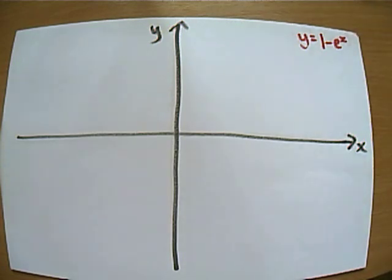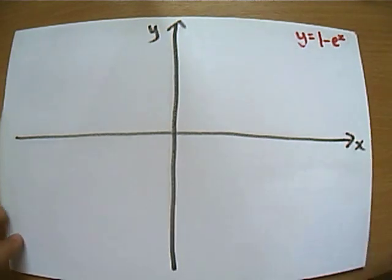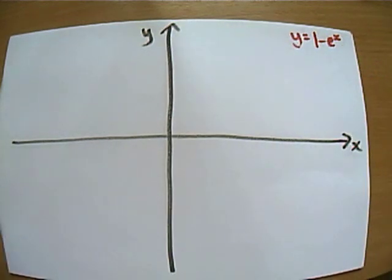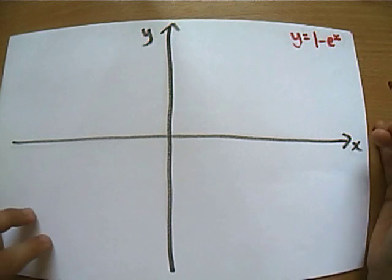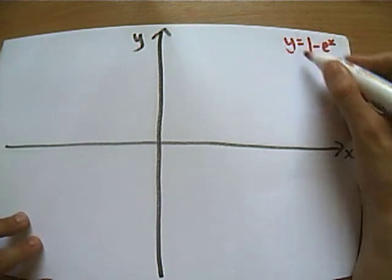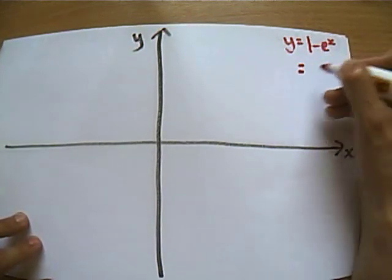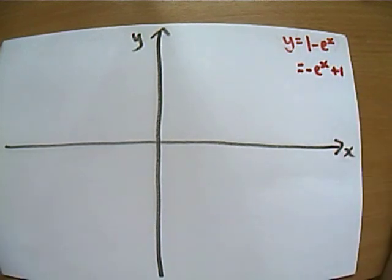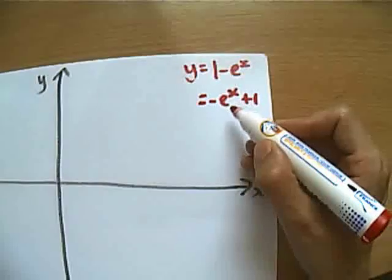Let's play with some more interesting graphs. What about the graph of 1 minus e to the x? What is that going to look like? We've got a couple of things going on here, so let's rewrite the equation. By reordering the terms, we can see more easily what we're dealing with.